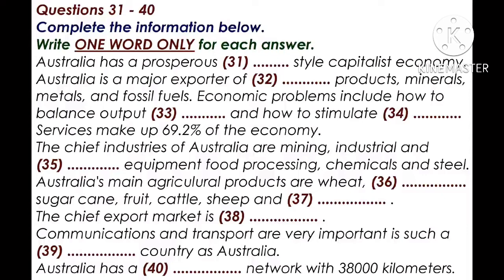The economy is made up like this: agriculture 3.1%, industry 27.7%, services 69.2%. The labor force has a similar pattern. The total labor force is 8.2 million. 34% work in finance and services, 23% in public and community services, 20% in the wholesale and retail trade, 17% in manufacturing and industry, and 6% in agriculture.